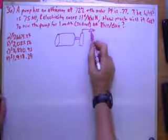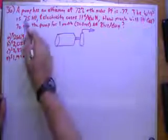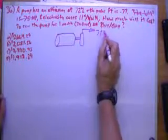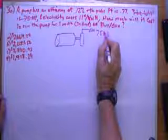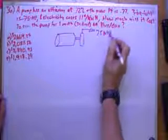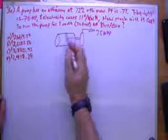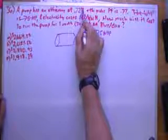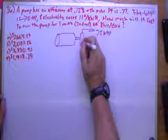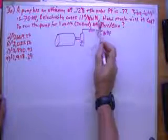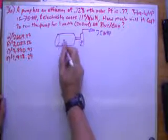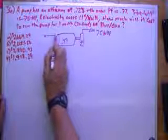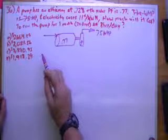My output is going to be water horsepower and we just said that's 75 horsepower. My pump has an efficiency of 72% or 0.72. The power factor is 0.77, so we've got to figure out what we got going in.